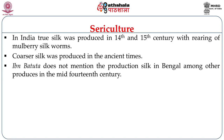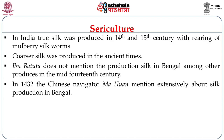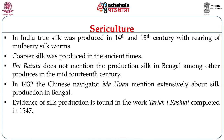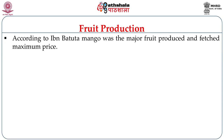Ibn Battuta does not mention silk production in Bengal among other producers in the mid-14th century. However, in the 15th century, precisely in 1432, Chinese navigator Ma Huan mentioned extensively the use of silk in Bengal and large-scale silk production. Evidence of silk production is also found in Tarikh-i-Rashidi, completed in the 16th century. With the introduction of pure silk, India was becoming a part of the international silk market.